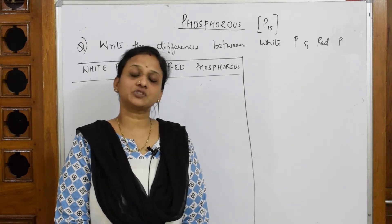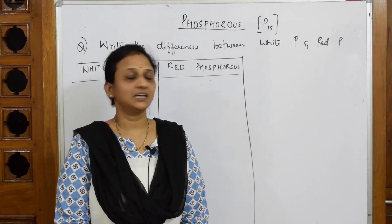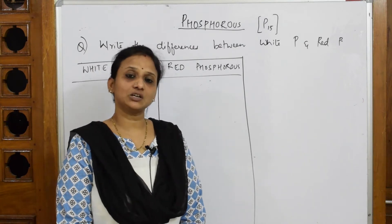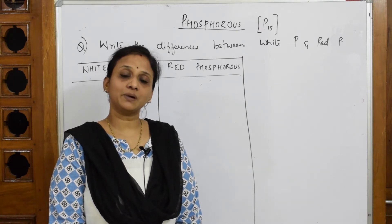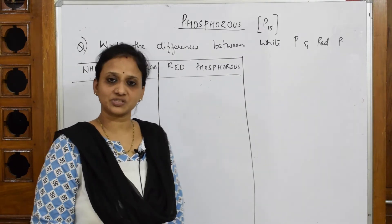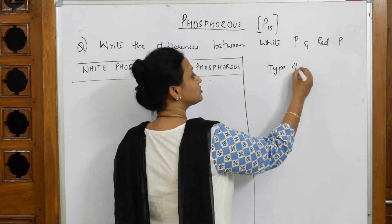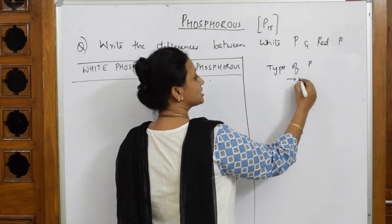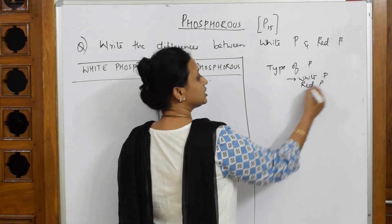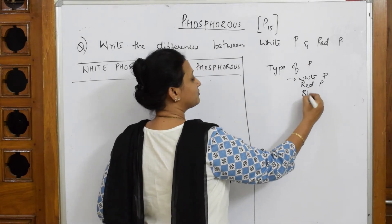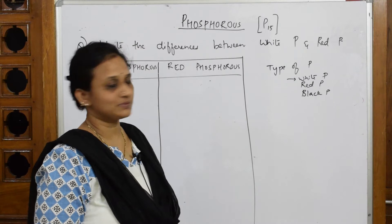Whenever you're studying phosphorus, the most important questions are asked from this topic in Group 15. Phosphorus has atomic number 15. First, let us see what we are supposed to study. You're going to study about types of phosphorus: white phosphorus, red phosphorus, and black phosphorus. Violet phosphorus also exists but is not prescribed for your syllabus.